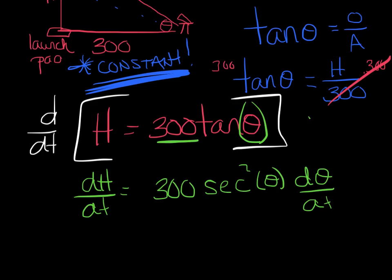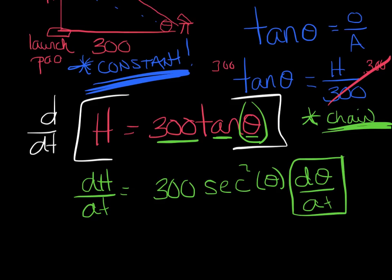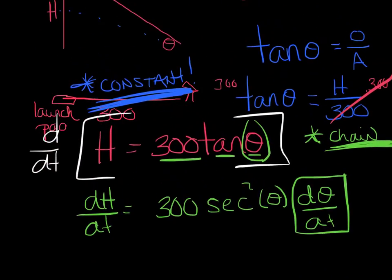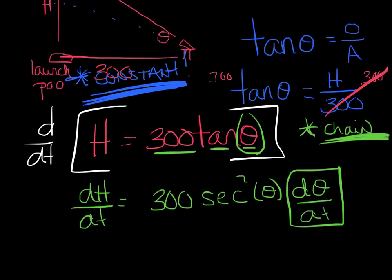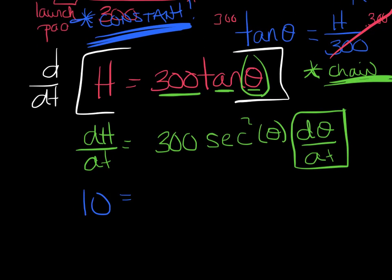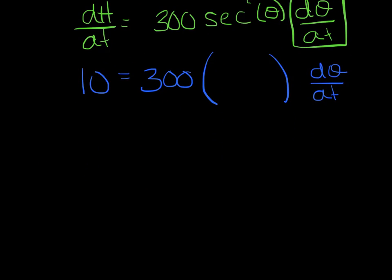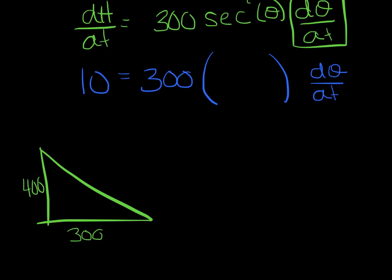Now I substitute what I know. dH/dt is 10, so 10 = 300 · sec²θ · dθ/dt. I'm not sure what sec²θ is at the moment, so let me go back to the triangle. They wanted this angle specifically when the height was 400. I need to find the hypotenuse: 300² + 400² — hopefully that reminds you of a 3-4-5 triple — so the hypotenuse is 500.